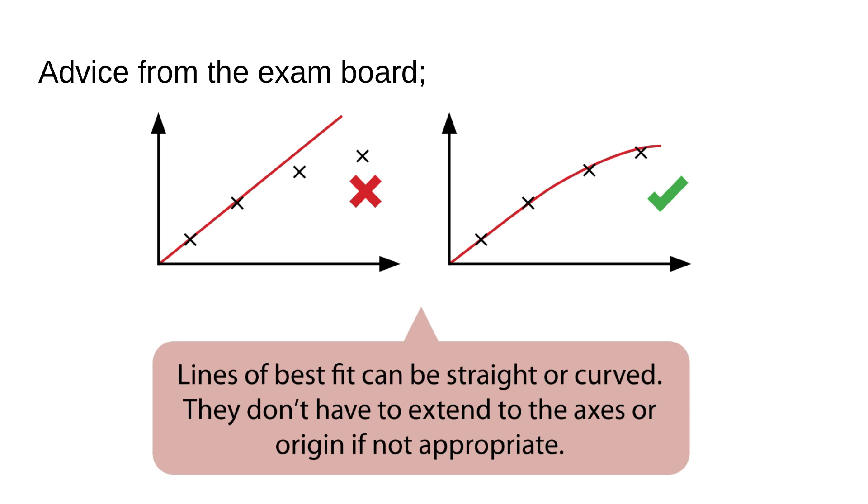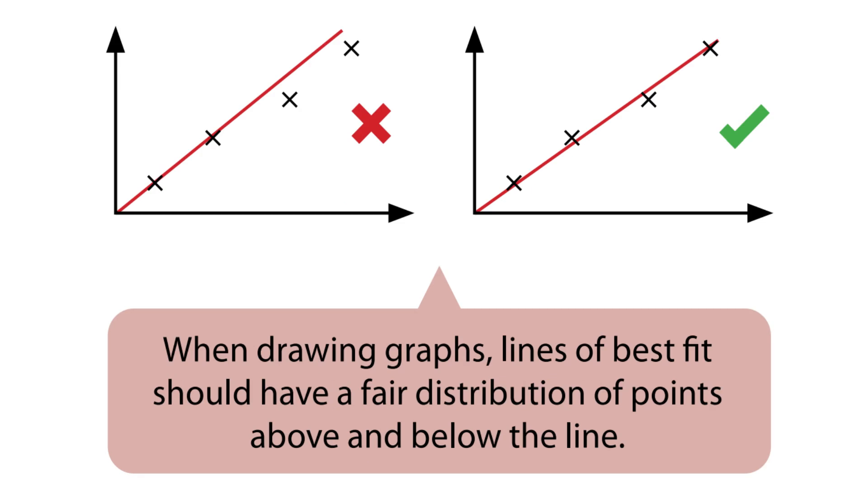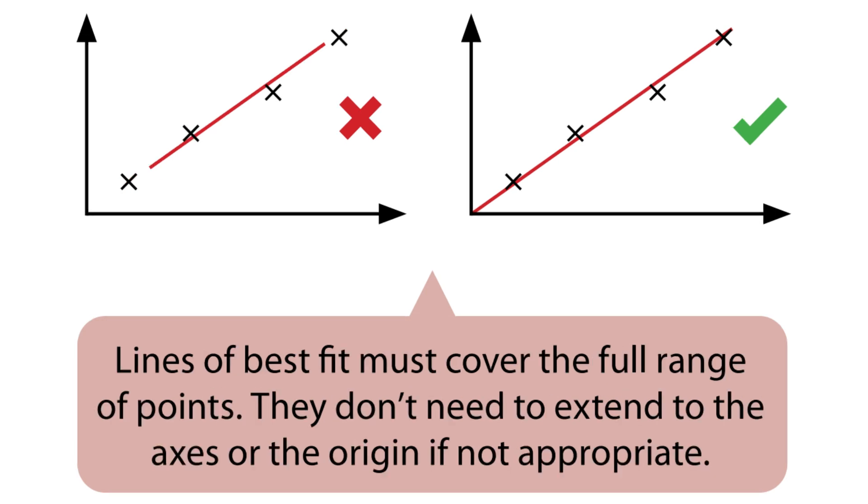The first thing they state is that lines of best fit don't have to be straight, they can be curved depending upon what the data is showing you. Next, we need to make sure that we've got an even distribution of points on either side of the line or curve of best fit. Finally, we need to make sure that the line or curve of best fit is going to and from the last points or near them. For example here you can see it's not going through the points but it's going at least to them. It's also a good idea not to go beyond your points as you can see here in this diagram, as sometimes you can get marked down for doing that.